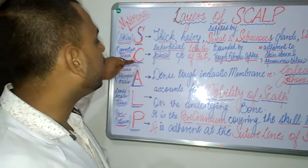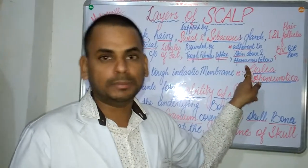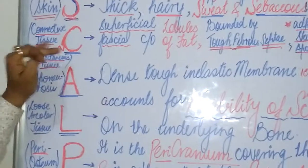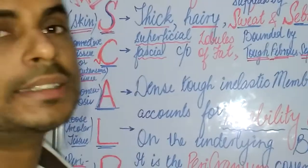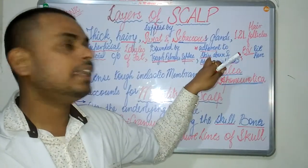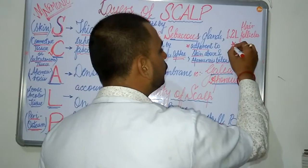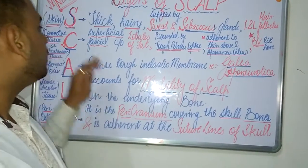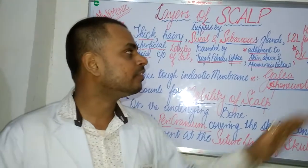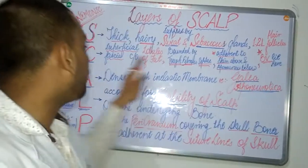The connective tissue is adherent to the skin above and to the aponeurosis below. A very important and distinguishing feature of this connective tissue is the presence of blood vessels. The scalp is richly supplied by a large number of blood vessels, and these blood vessels are embedded within the connective tissue.